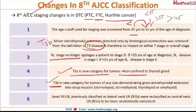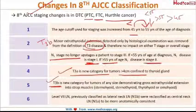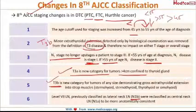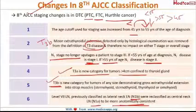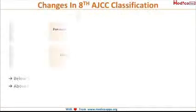Another update: patients less than 55 years with N1 disease are staged under stage 1 category, while patients more than 55 years are staged under stage 2 category. The last change is that level 7 lymph nodes, previously classified under N1b as lateral neck lymph nodes, have now been reclassified under N1a as central neck lymph nodes, to be more anatomically consistent.